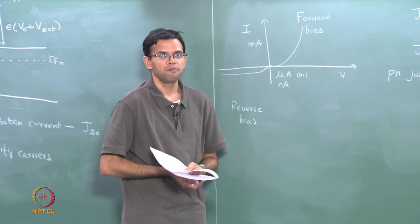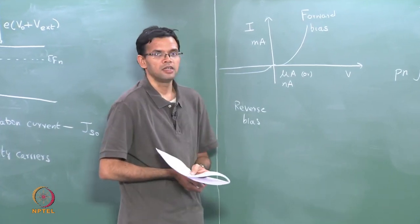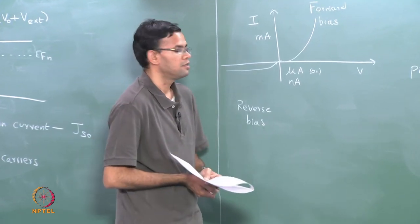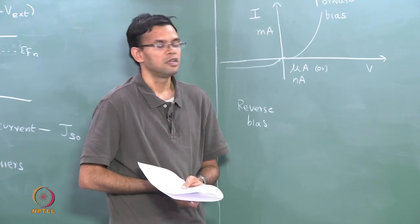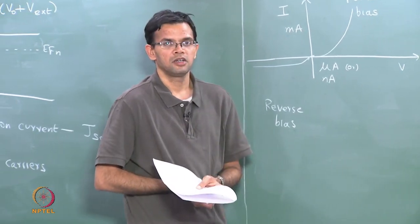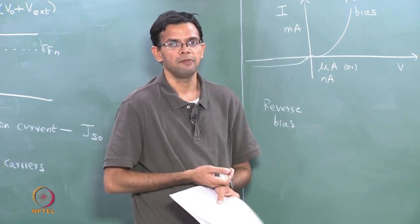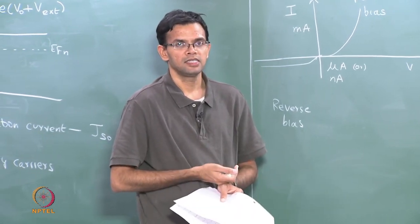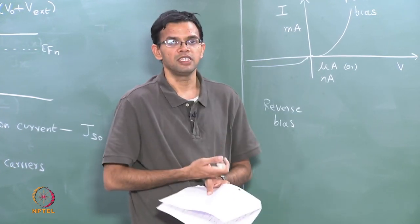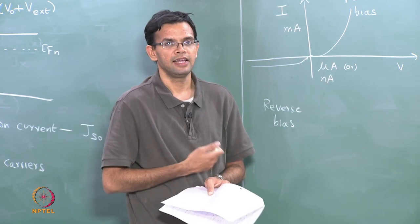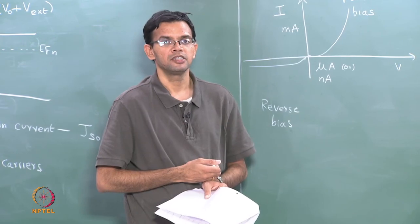So today we have looked at a PN junction in bias. We found that a PN junction is essentially a rectifier — it conducts in one way and not the other. So far we have only looked at junctions which are between the same material, where P and N are the same material. Next class we will first do an example to get some idea of the numbers that are involved, and later we will look at what happens if we have a junction between different materials.